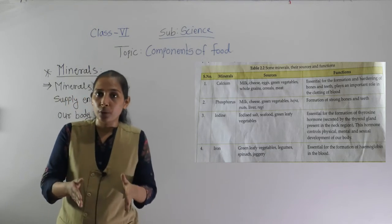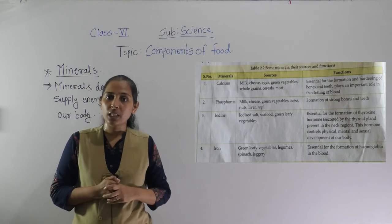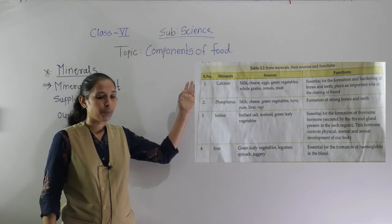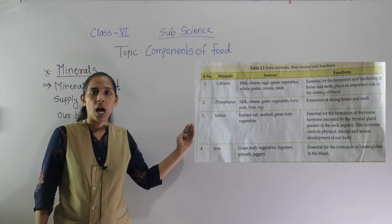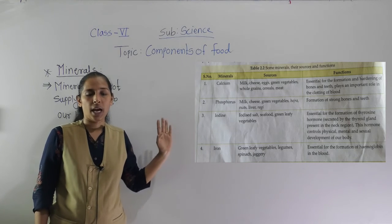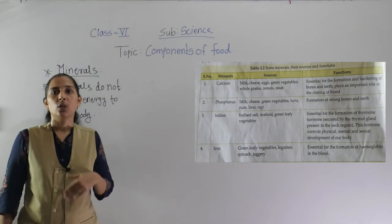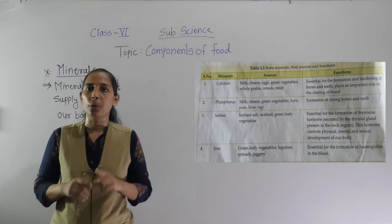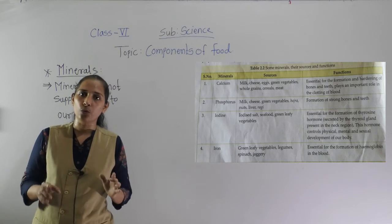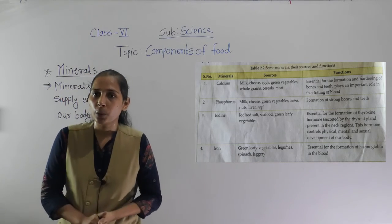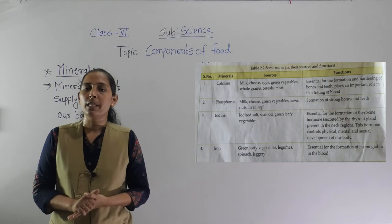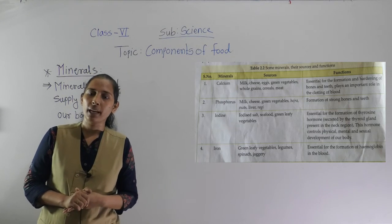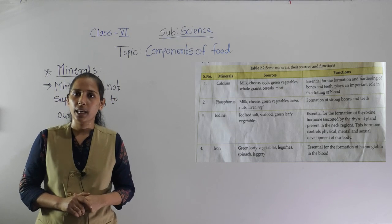Today we have discussed about minerals — specifically calcium, phosphorus, iodine, and iron. Vitamins and minerals together are called protective food. We will discuss the next topic in the next video. Goodbye for today, thank you.